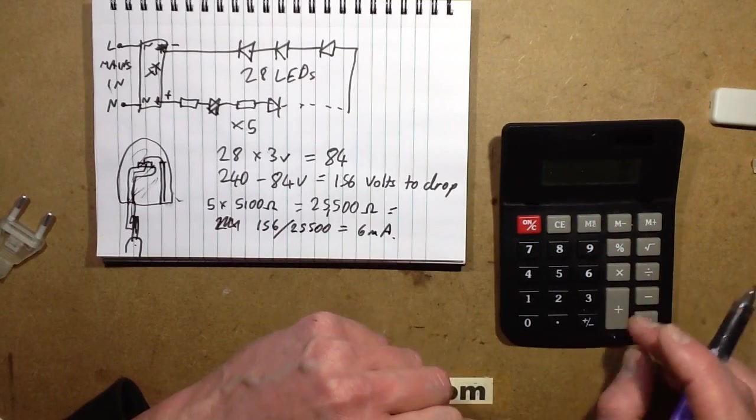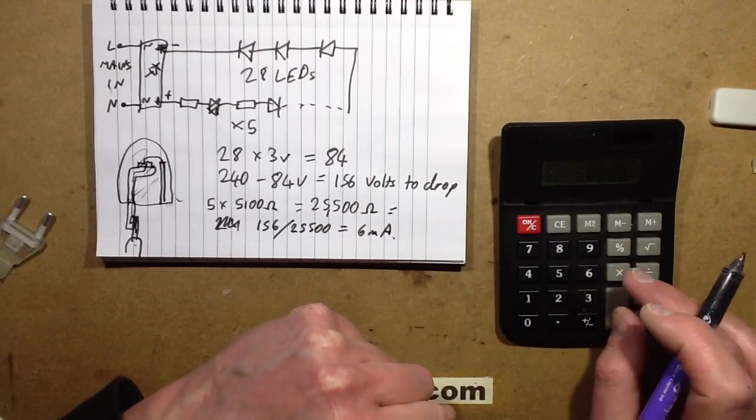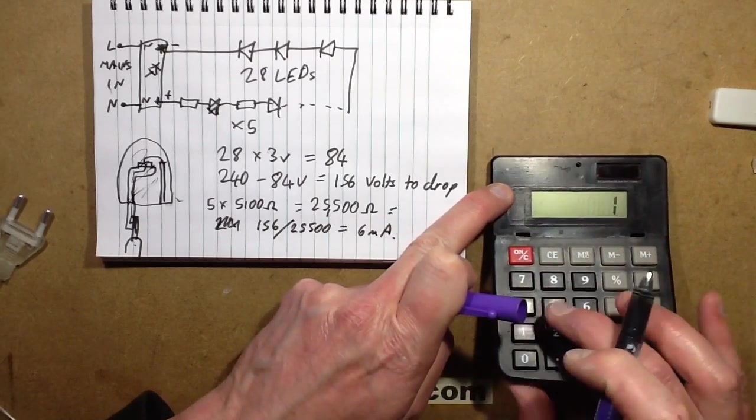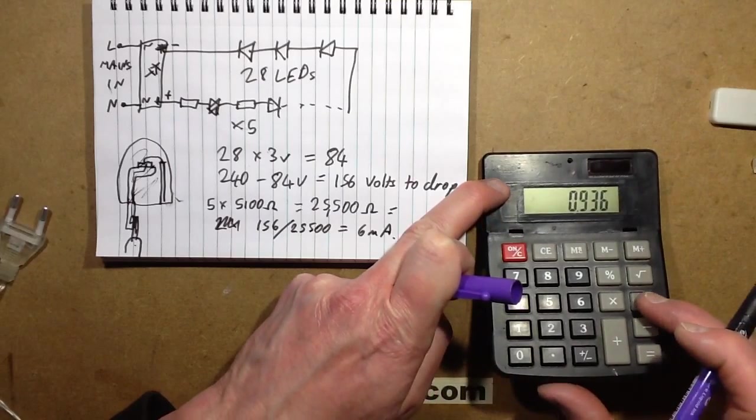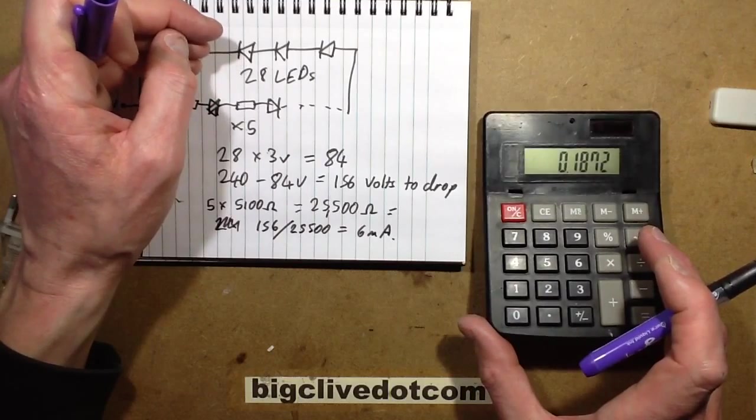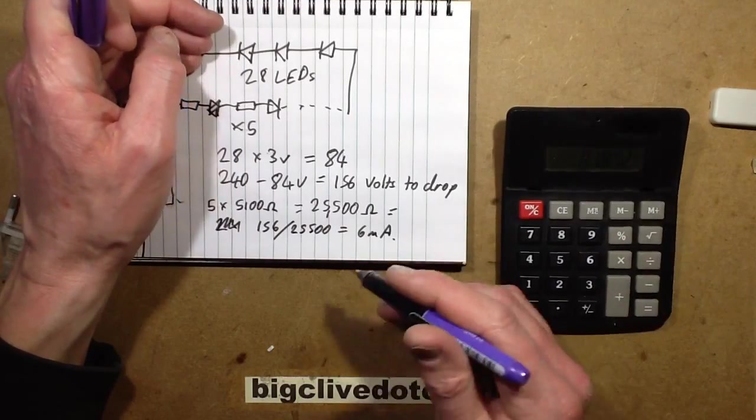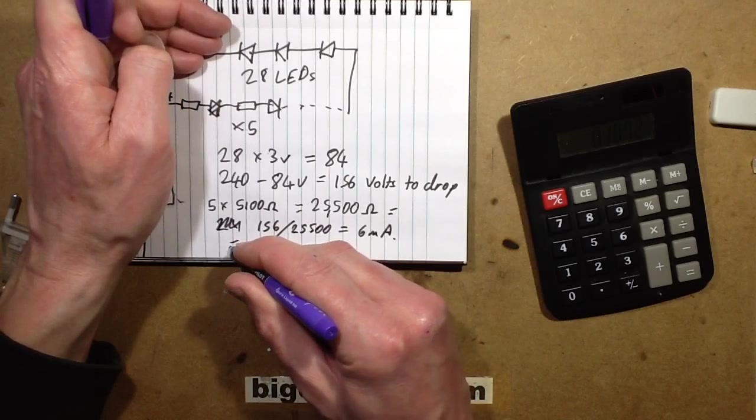So then if you consider that, it's 6 milliamps times the voltage being dropped, which is 156, is the best part of a watt. It's 0.9. And you divide that by five because there's five resistors. Each resistor is dissipating approximately 0.188 watts. Let's say 0.19 watts each resistor.